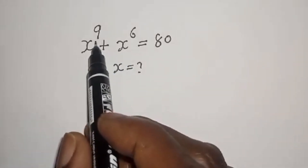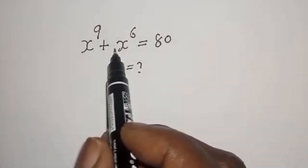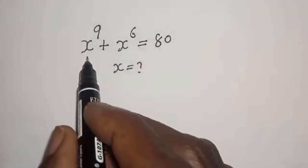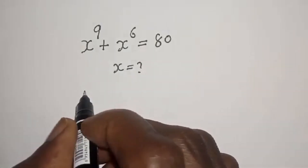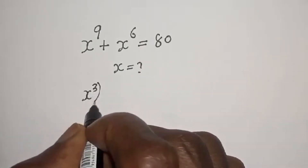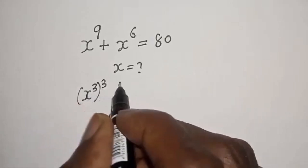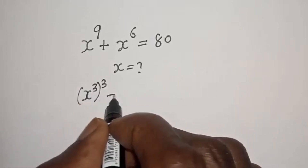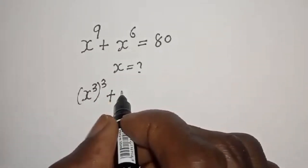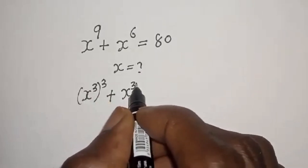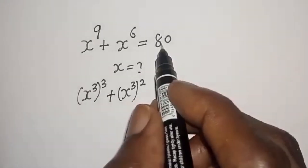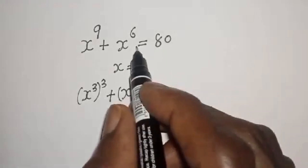Hello. How to solve s raised to power 9 plus s raised to power 6 is equal to 80. s raised to power 9 can be written as s raised to power 3 to the power of 3, plus s raised to power 6 can be written as s raised to power 3 squared, equal to 80.